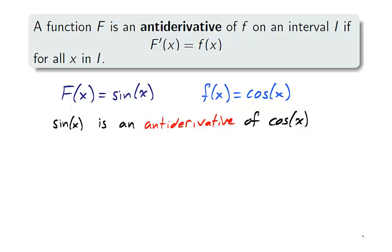Take, for example, sine x is big F, and cosine x is little f. The derivative of sine is cosine, so sine of x is an antiderivative of cosine x.